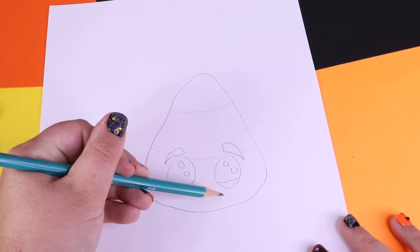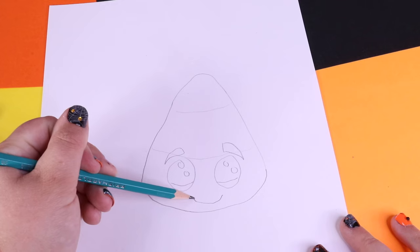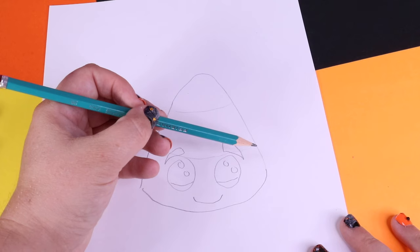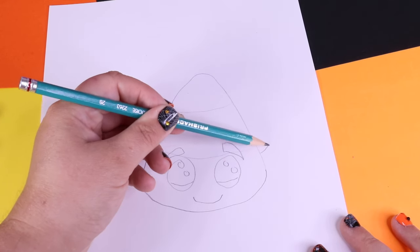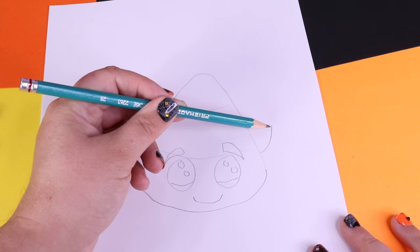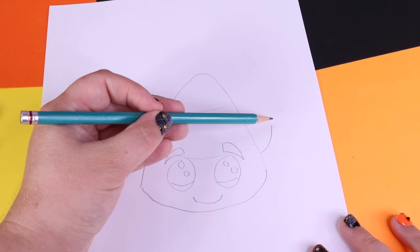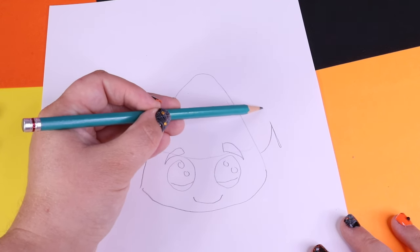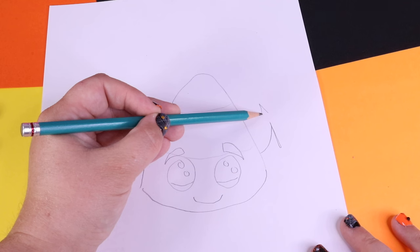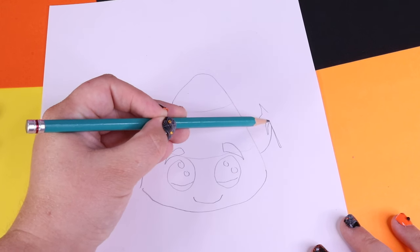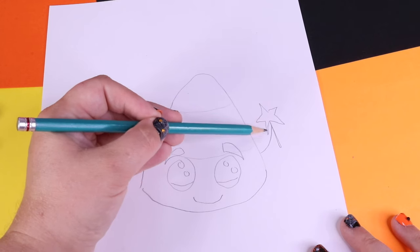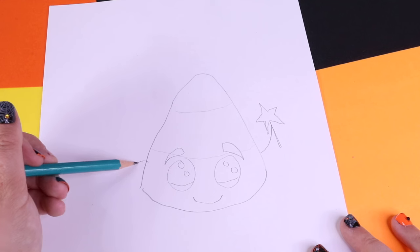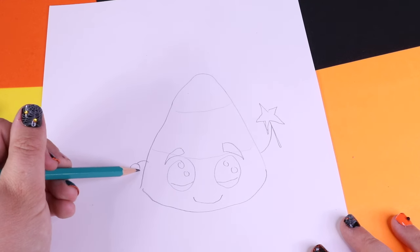Any candy corn needs a cute little smile. And we can also give our candy corn a hand. Draw it off to the side. And let's see what we want to put in their hand. How about a wand? And the other hand? How about a cute little Halloween basket?